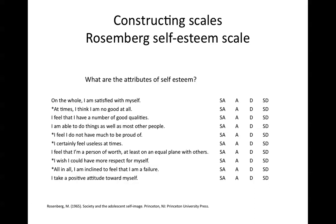For example, here is a scale that Rosenberg created when looking at adolescent self-image. We ask around 10 to 12 questions here on self-esteem. I've put asterisks next to some of these questions because they are actually negative questions, whereas the ones without asterisks are positive. For example, 'on the whole, I am satisfied with myself' is a positive question, but 'at times, I think I am no good at all' has an asterisk marking it as negative.